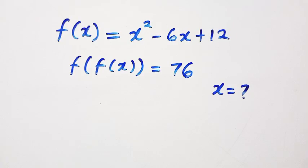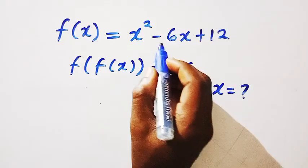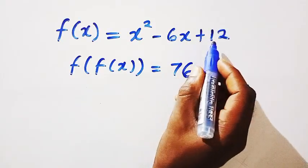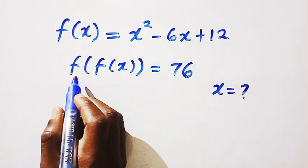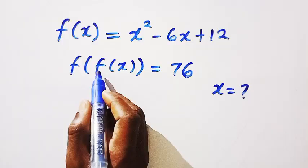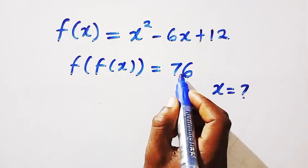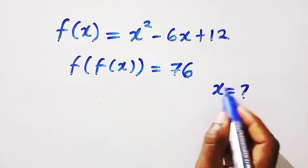Good day viewers. You are welcome. How to solve this nice functional equation given that f of x equals x squared minus 6x plus 12 and also f of f of x equals 76. And what is x?